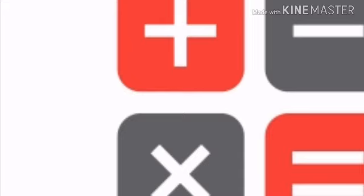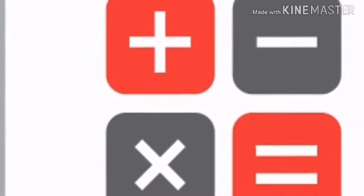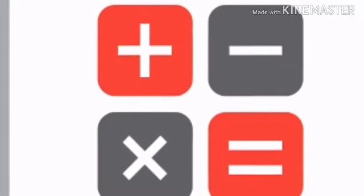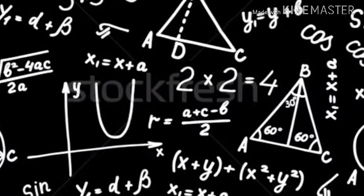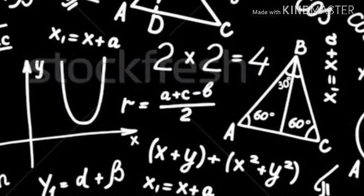24th Question: Show that when the curved surface area of the right circular cylinder inscribed in a sphere of radius capital R is maximum, then show that height of the cylinder is root 2 R.